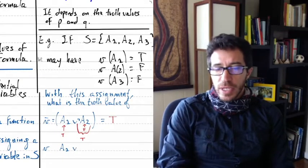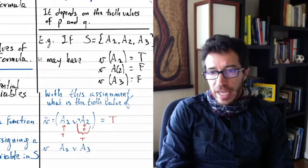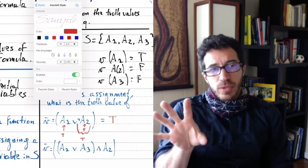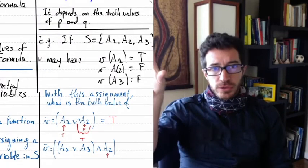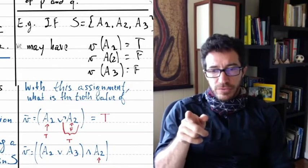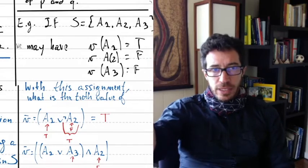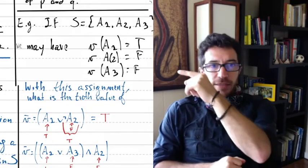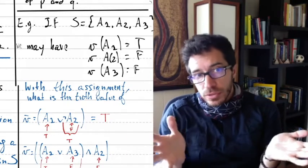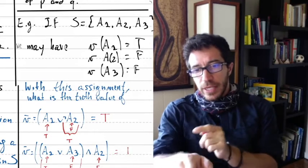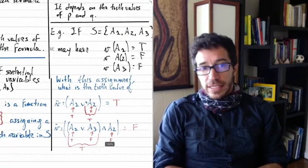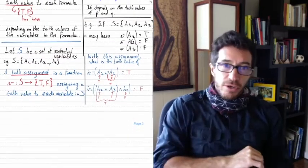Let's look at another example. Suppose we want to find the truth value of (a1 OR a3) AND a2. We look at the truth value of each particular variable and then deduce the whole truth value. a2 is false. a1 is true and a3 is false; those two form a disjunction — one is true, one is false, so altogether the disjunction is true. Then we get true AND false, and for an AND both need to be true, so we get that that sentence is false given that particular truth assignment.